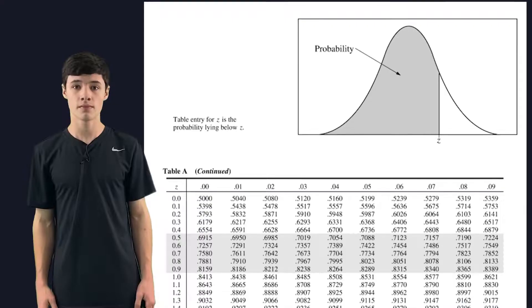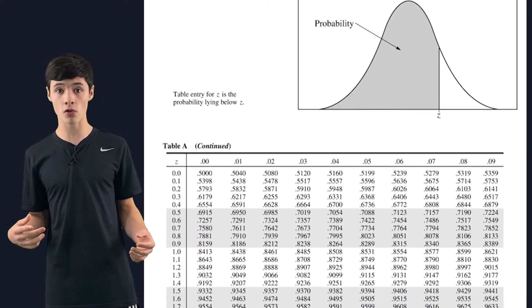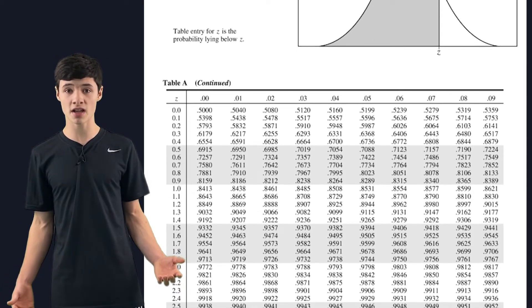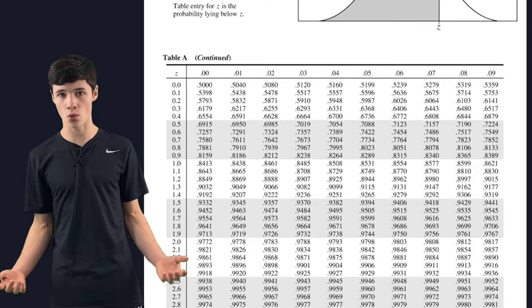Now, you could try to understand all the advanced calculus that's going on here, or you can just use tables. And these tables are really helpful, but they only work for something called a standard normal distribution, which is just a fancy way of saying a mean of 0 and a standard deviation of 1.